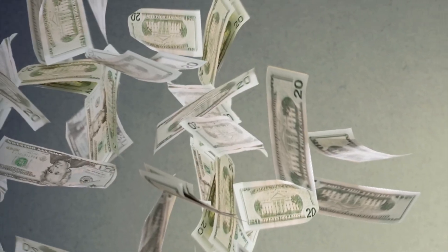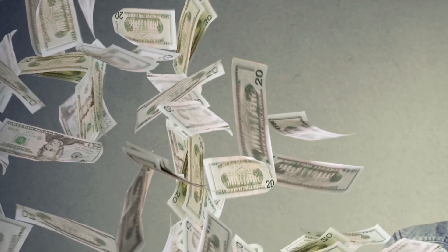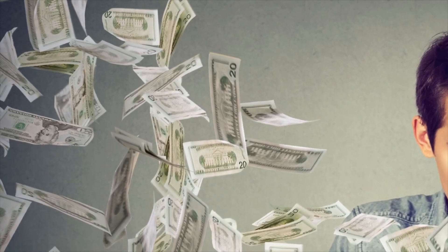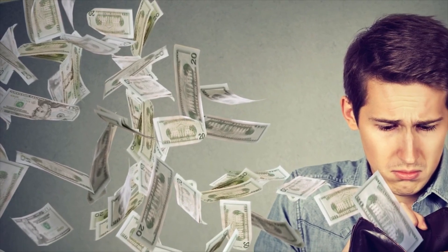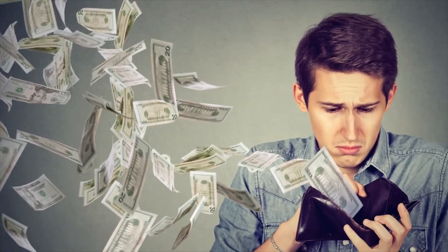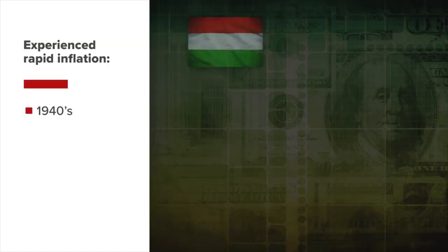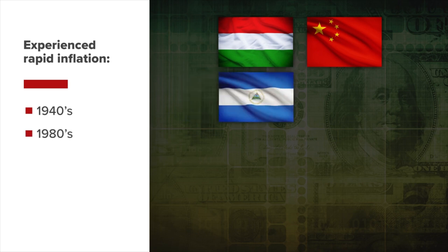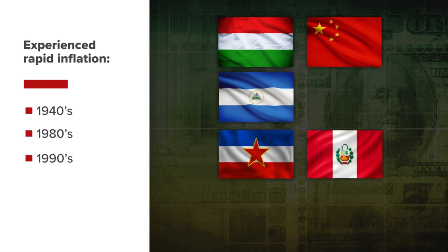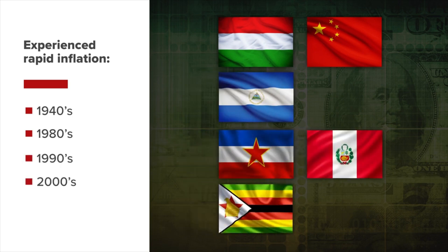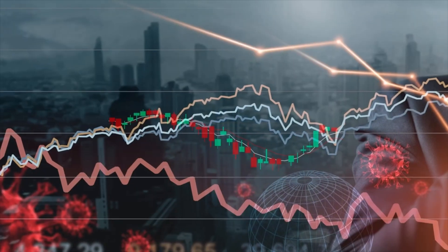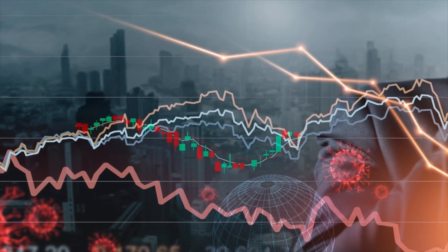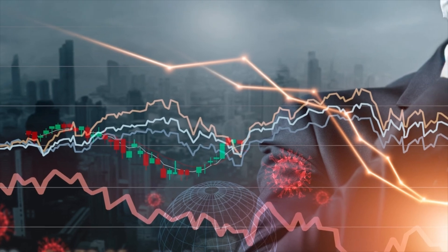People hate paying more for stuff. They don't like seeing their cash savings lose purchasing power, and they also don't like having difficulties planning for the future due to uncertain, non-stable prices. In the 1940s, Hungary and China experienced rapid inflation due to rapid money supply growth without simultaneous productivity growth. In the 1980s, the world witnessed the same dynamic in Nicaragua; in the 1990s, in Yugoslavia and Peru.